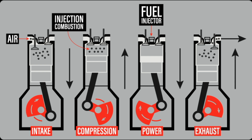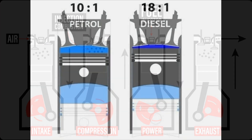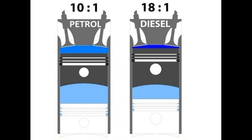Several factors affect the compression ratio. First, stroke length: the stroke length is the distance between the TDC and BDC of an engine cylinder — the higher the stroke length, the higher the CR. Second, bore diameter: the bore diameter is the inner diameter of the engine cylinder inside which the piston moves — the higher the bore diameter, the higher the compression ratio. Third, square engine: these are engines in which the stroke length equals the bore diameter, giving a balanced power and speed output.